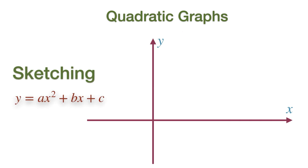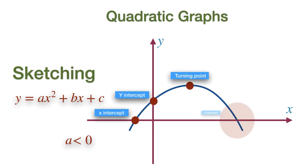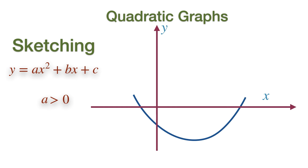When sketching a quadratic graph, we first need to know the orientation of the graph. This can be quickly checked by looking at the coefficient of X squared, as discussed earlier. If this is less than zero, we have a graph that is upside down or a sad face. When the coefficient of X squared is greater than zero, the graph will be U-shaped or a happy face. This is what I call the orientation of the graph.